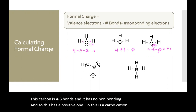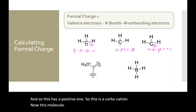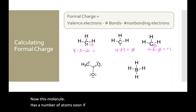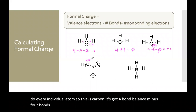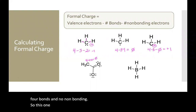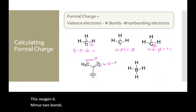Now this molecule has a number of atoms, so if you really want to calculate this you need to do every individual atom. This carbon has four valence minus four bonds and no non-bonding, so this one is neutral. This oxygen is six minus two bonds, minus four non-bonding, so it's neutral.